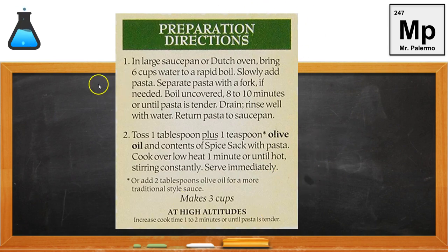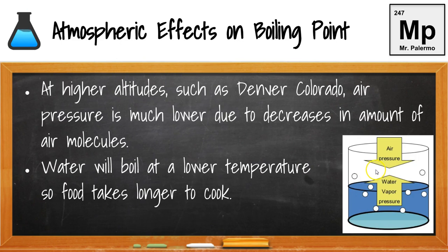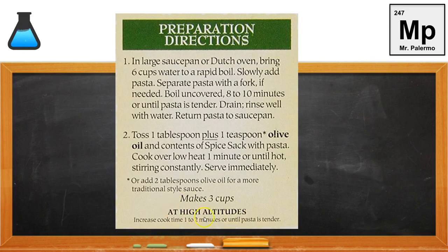If we look at the side of a box of pasta, you'll see at the bottom it says: at high altitudes, increase cook time one to two minutes. Why are we increasing the time we have to cook at high altitudes? Why can't we cook the pasta for the same amount of time, eight to ten minutes? Because there's less air pressure at high altitudes. Less air pressure means we need less vapor pressure to overcome that lower air pressure, and therefore it's going to boil at a lower temperature. If it boils at a lower temperature, the food is cooking at a lower temperature, and therefore it's going to take longer for that food to cook.